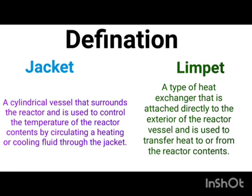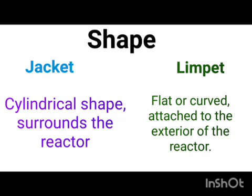In the case of limpet, it is a type of heat exchanger that is attached directly to the exterior of the reactor vessel and used to transfer heat to or from the reactor material. About the shape: a jacket is cylindrical in shape and surrounds the reactor, while a limpet is flat, curved, or half-coil shaped and is attached to the exterior of the reactor.